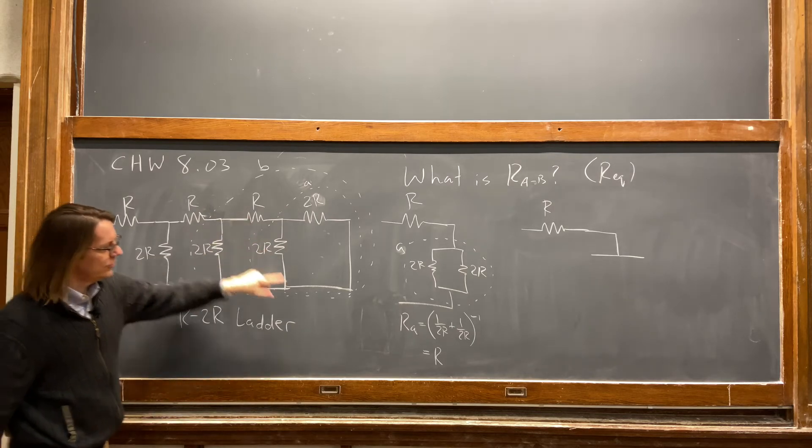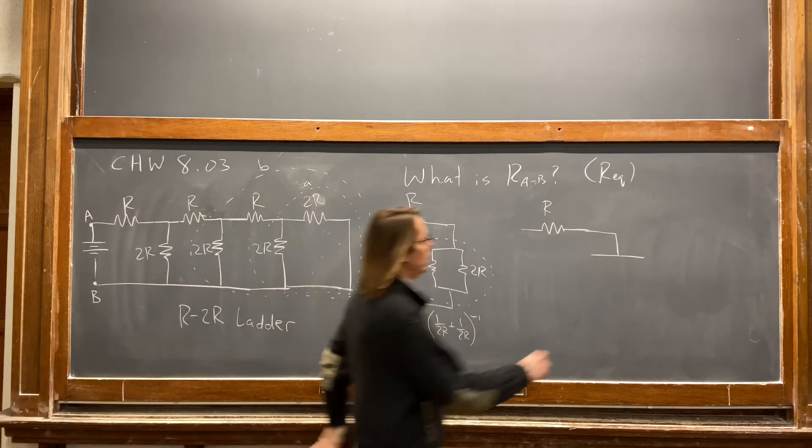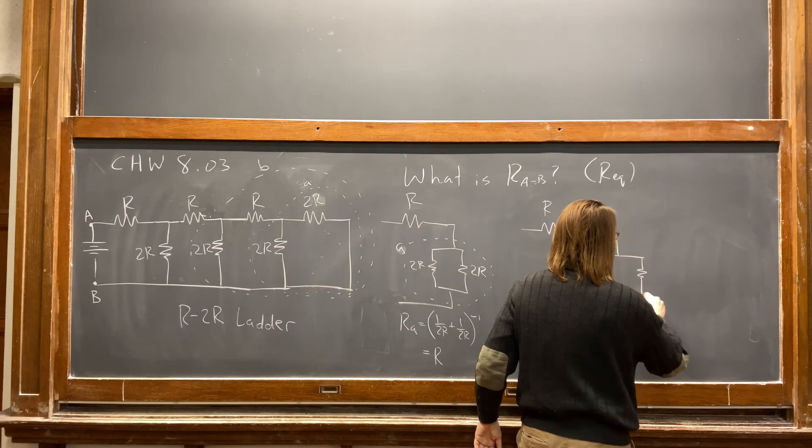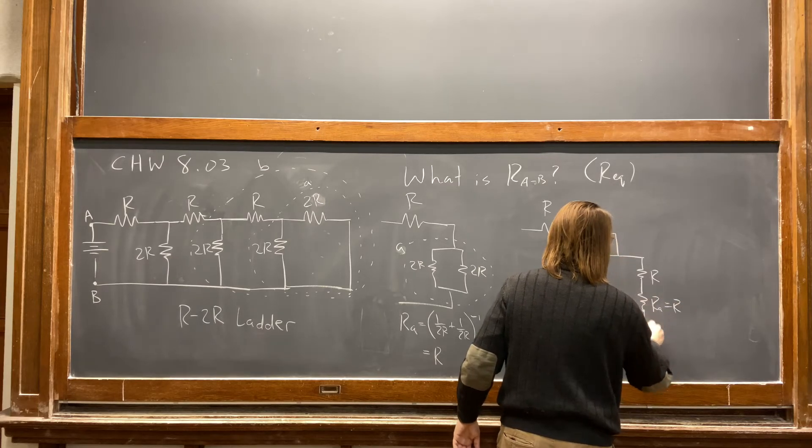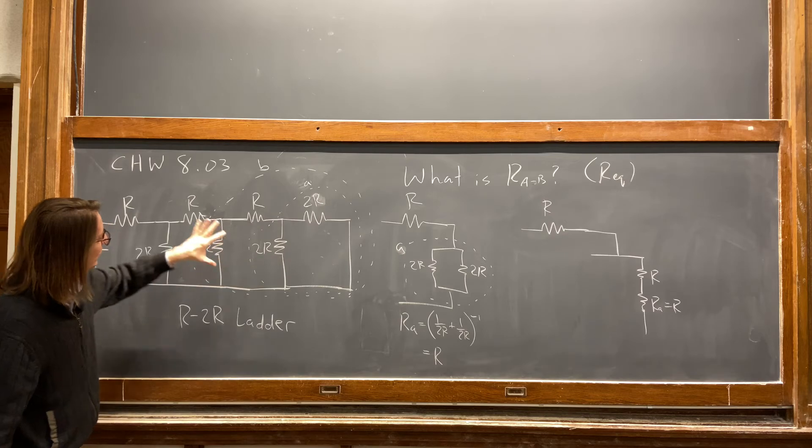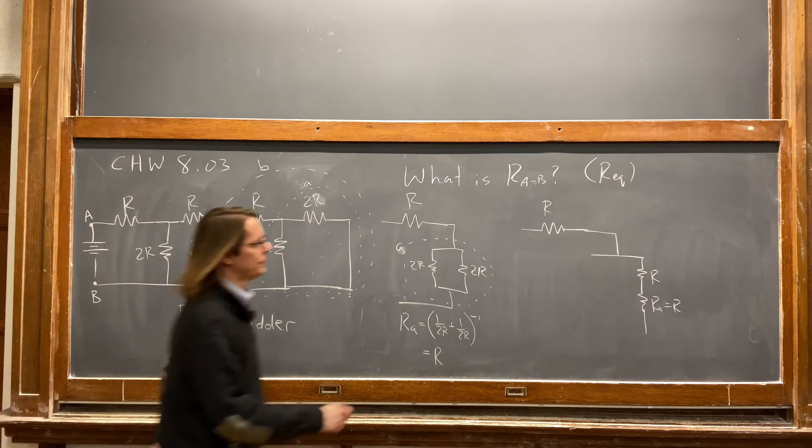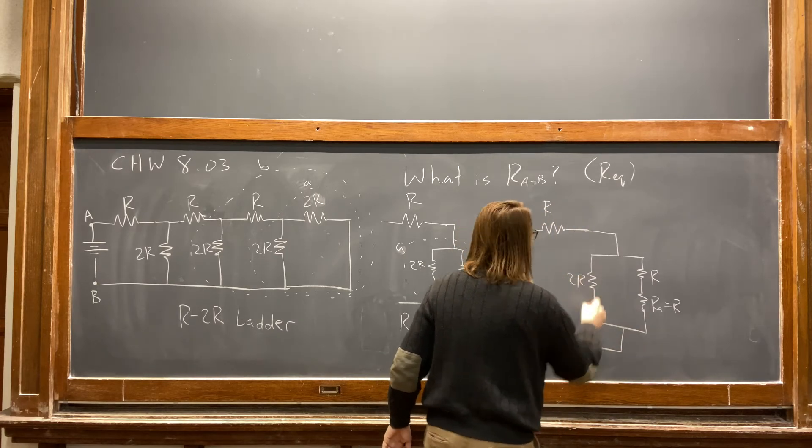So we have R plus R in series. So that one side would come down to R, and that's really RA, which is equal to R. All right, that's that side. And what is this side? 2R. Ah, ah-ha, 2R.